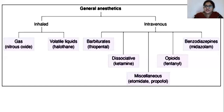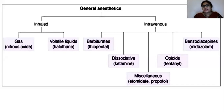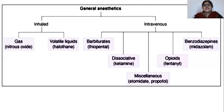When we talk about general anesthetics, there are two huge classes. The first one is inhalation and the second one is intravenous. For inhalation, there are two further subtypes: the gaseous form and the volatile liquid form. The one in gaseous form is nitrous oxide, and the one in volatile liquid form is halothane.